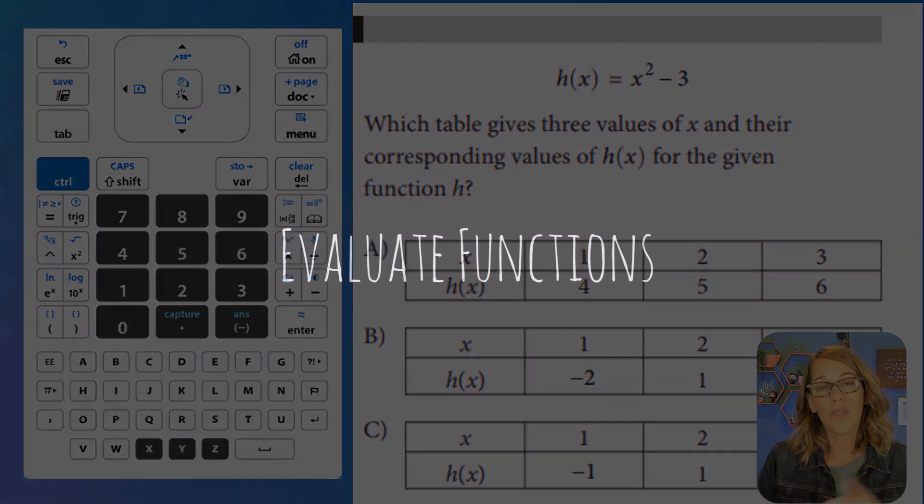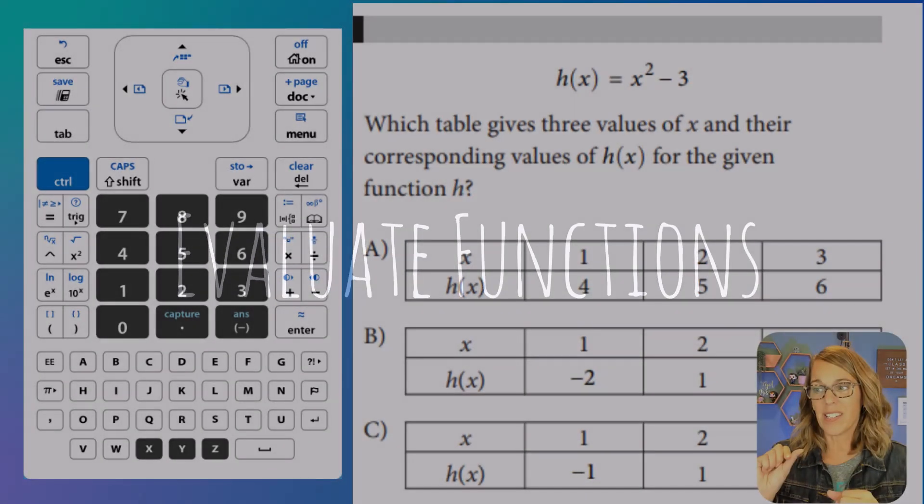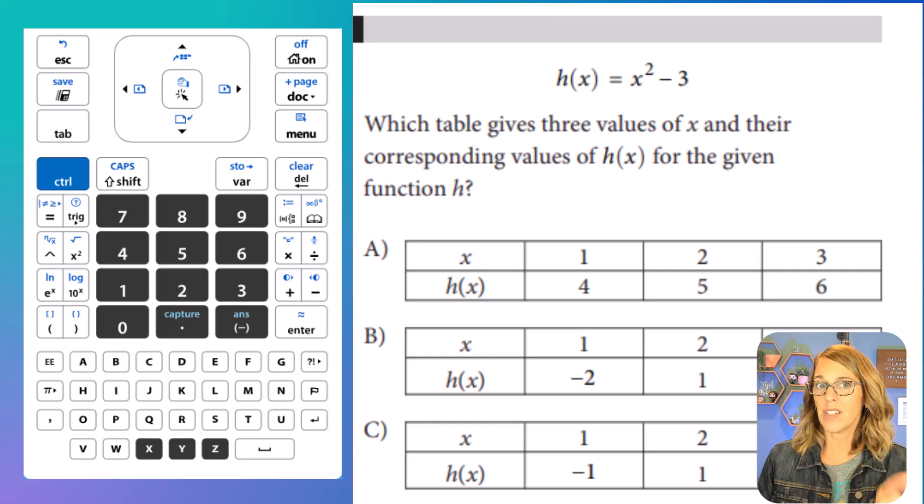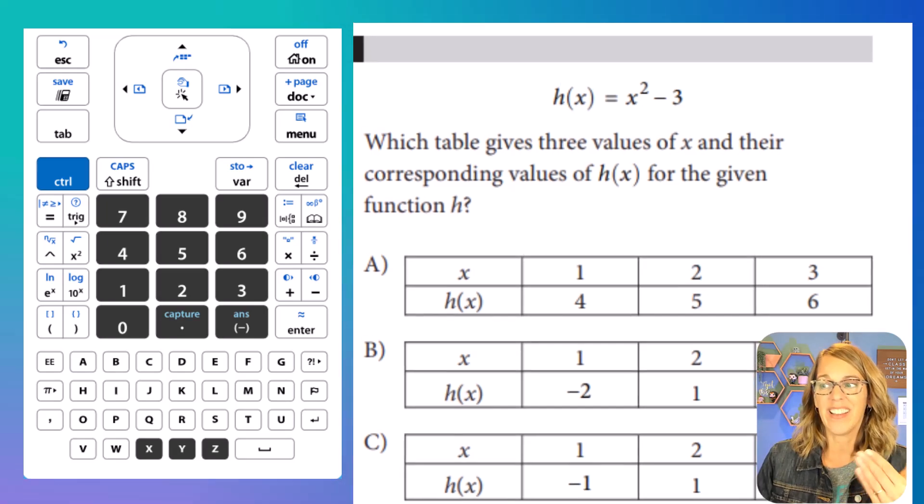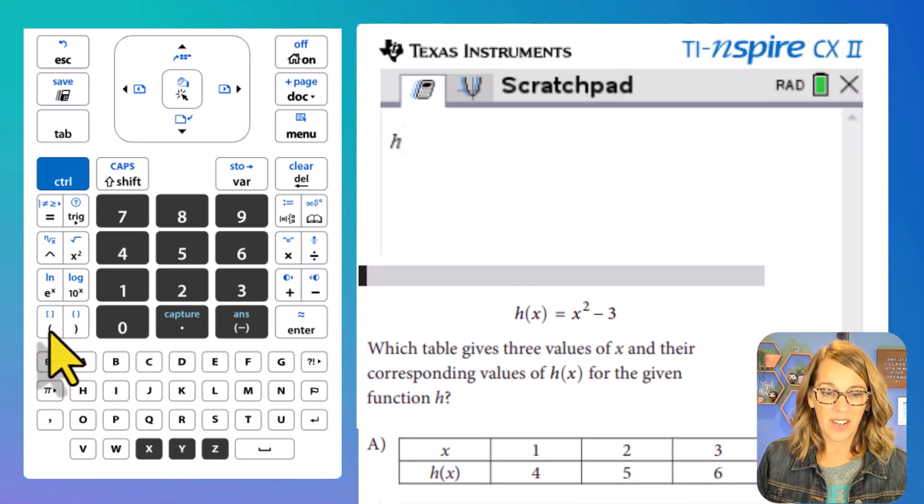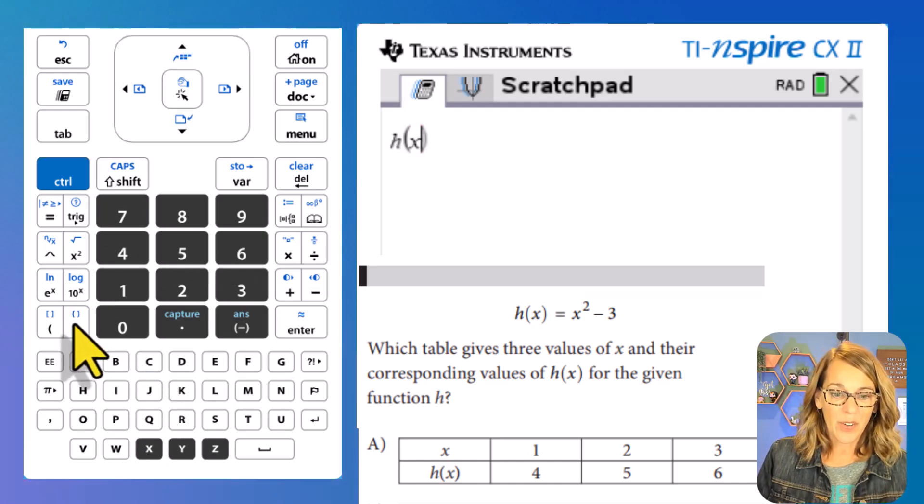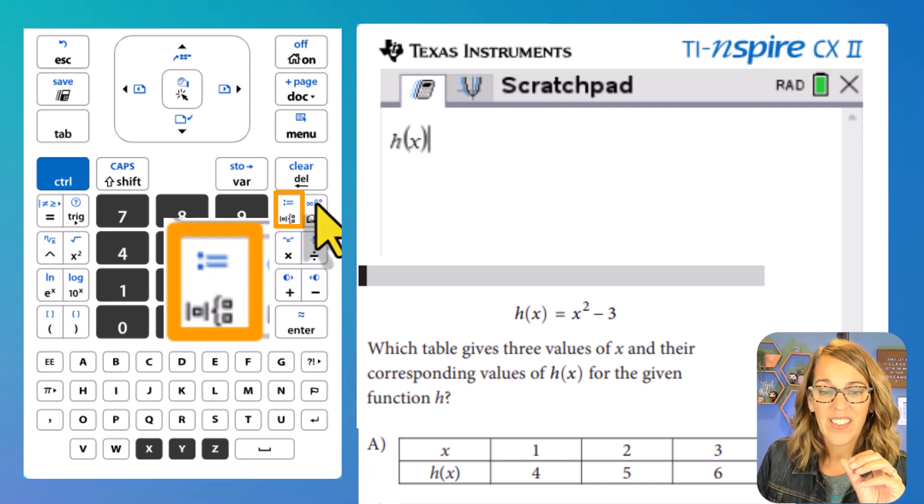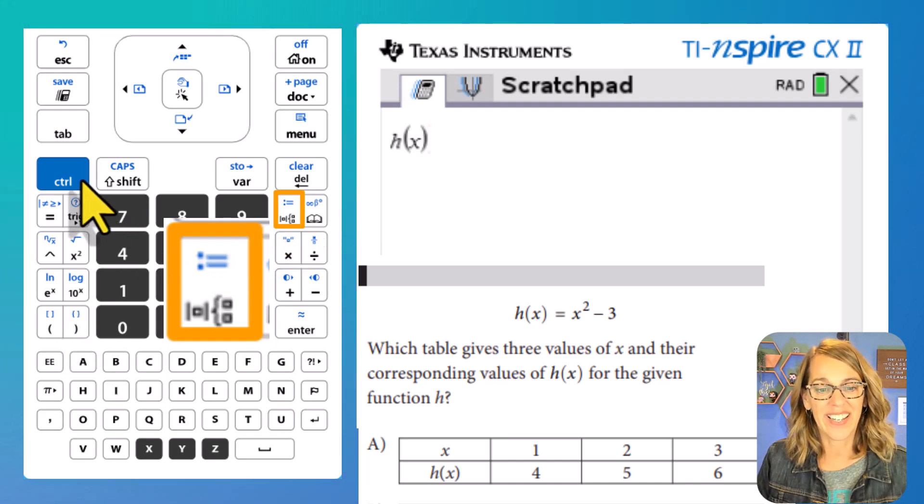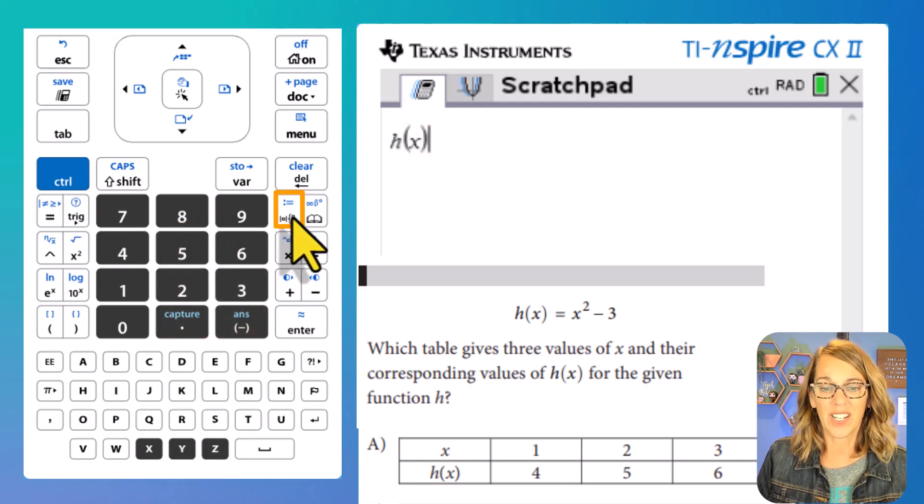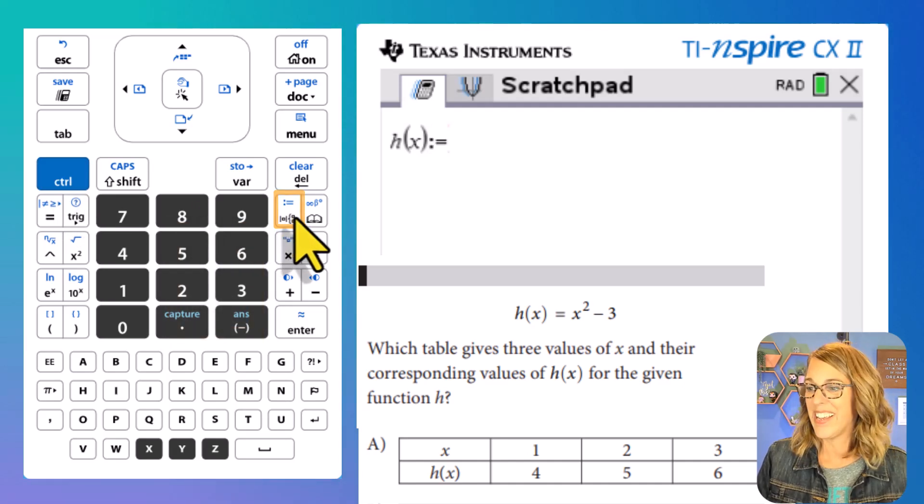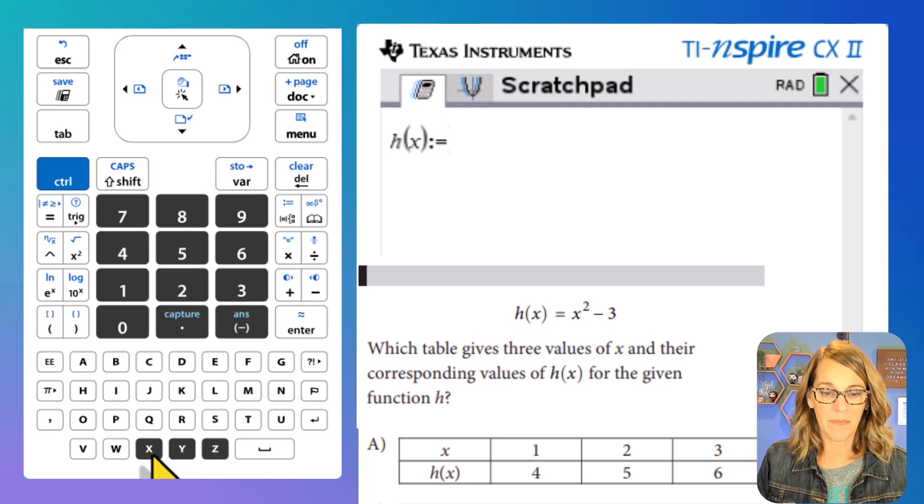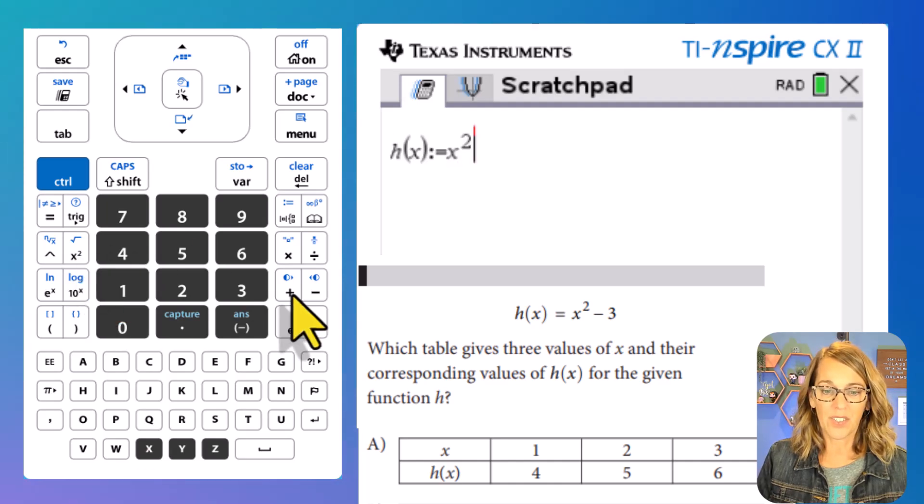Next, we've got a function that we need to evaluate. Now I think the easiest way to do this is to assign H of X to the expression X squared minus 3. So let's do that. So I'm going to type the letter H and then parentheses variable X and then close parentheses. And then I'm going to use the assign tool instead of the equals here. That assign tool is right next to number 9. To access that, I need control to get that colon equals. And I'm going to assign it to be an X squared minus 3. So variable X squared minus 3 and then enter.